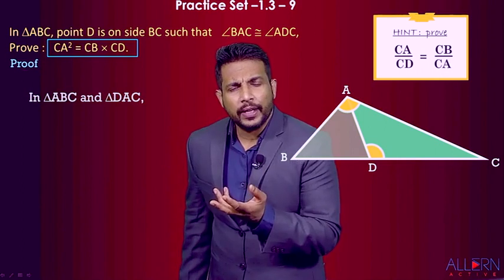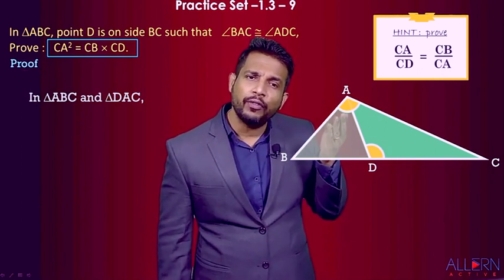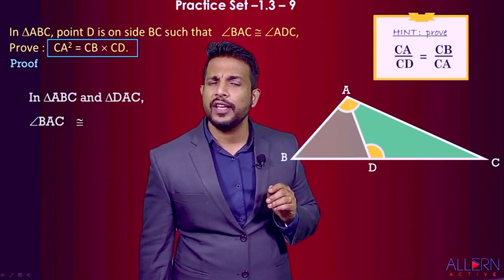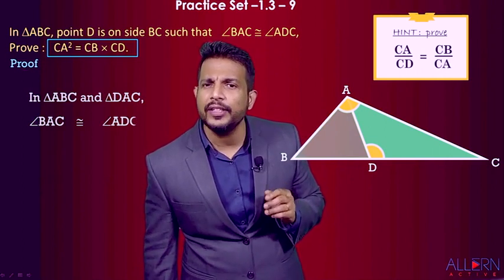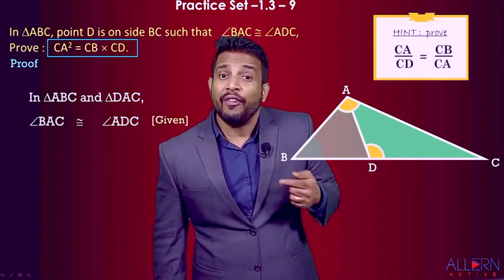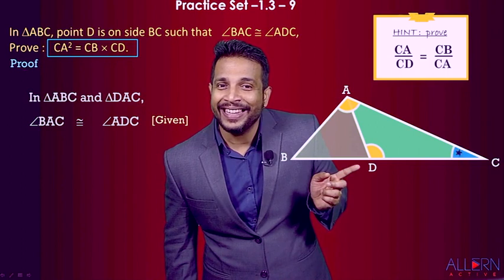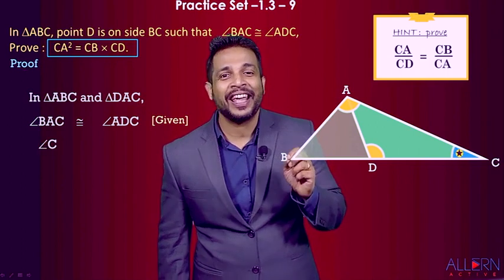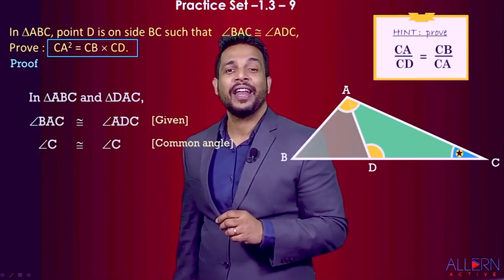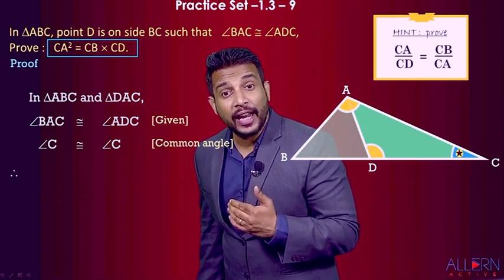Now, in both triangles there is one pair of angles already congruent: angle BAC is congruent to angle ADC, because it is given. We also have a common angle C, so angle C is congruent to angle C — reason being it is a common angle.